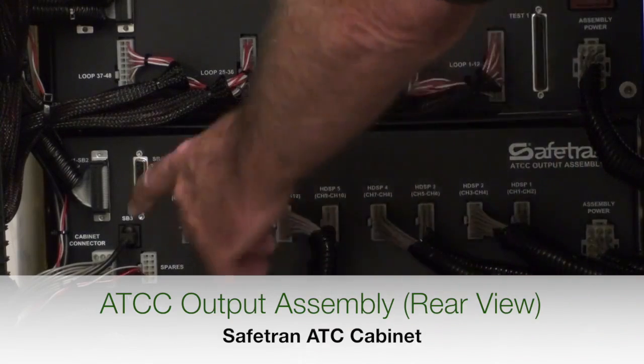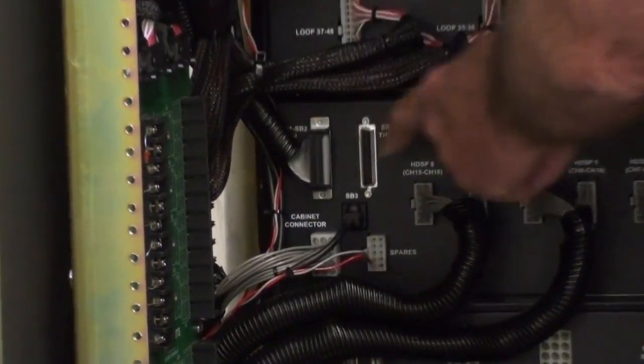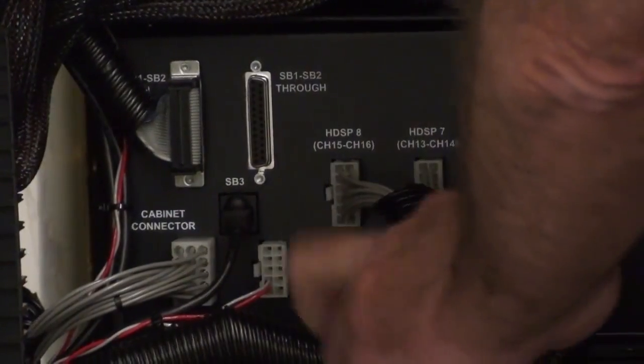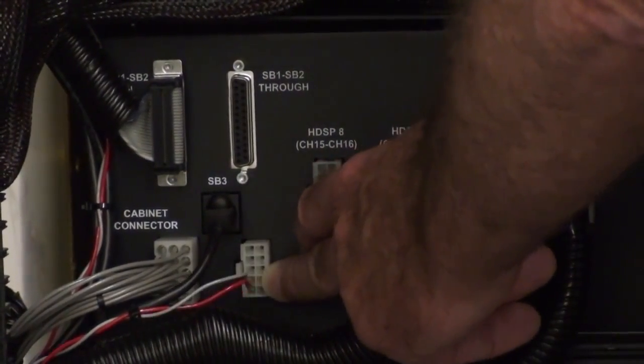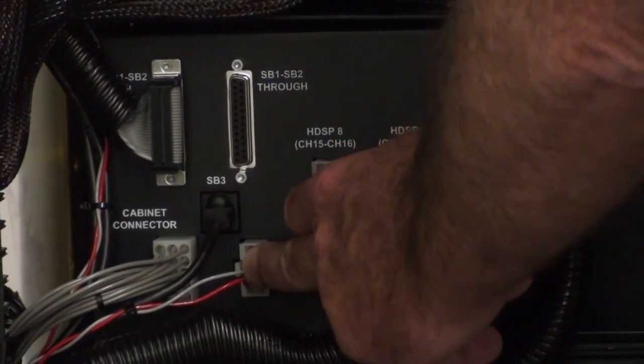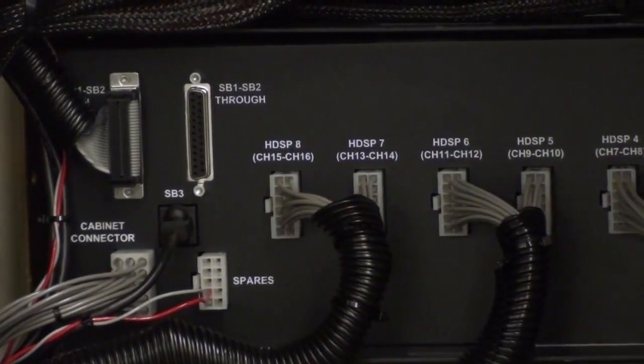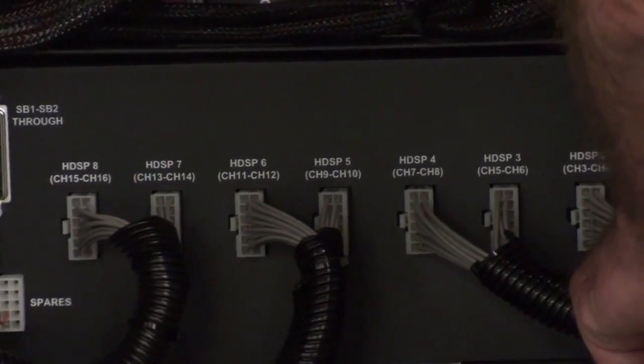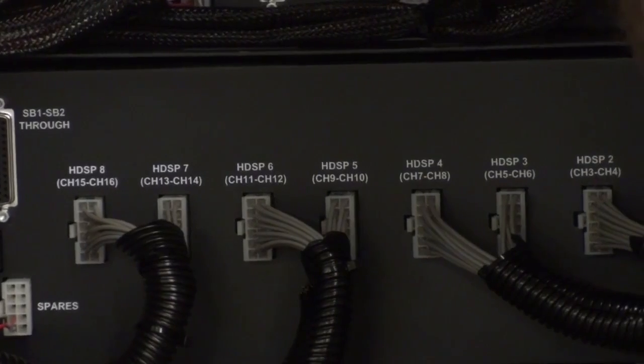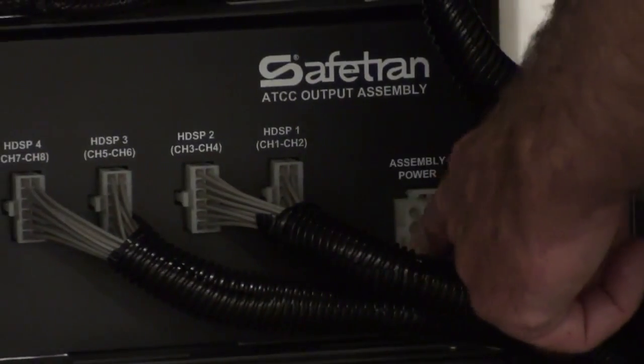Here on the rear panel of the output assembly, going from left to right, are the serial bus in-through connectors for cabinet communications. Below that is the cabinet connector, which is used for hooking up the police panel and other switches. Here is a spare output connector for the SIU that includes six extra 24-volt DC input-output ports. This spare output connector includes 24 volts DC and ground. Across here are the eight output termination assembly interface connectors. Each connector contains two channels of both the output signals and the field wire sent signals from the output termination assembly for monitoring by the CMU. Finally, on the right-hand side is the power connector.